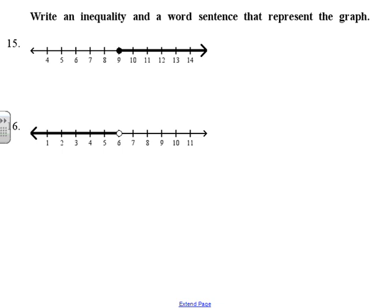Number fifteen: write the inequality. We're looking at 9, so x is greater than or equal to 9 because we have a closed circle, emphasizing all numbers bigger than x. Number sixteen: x is less than 6 because it's an open circle, emphasizing all numbers smaller than x.